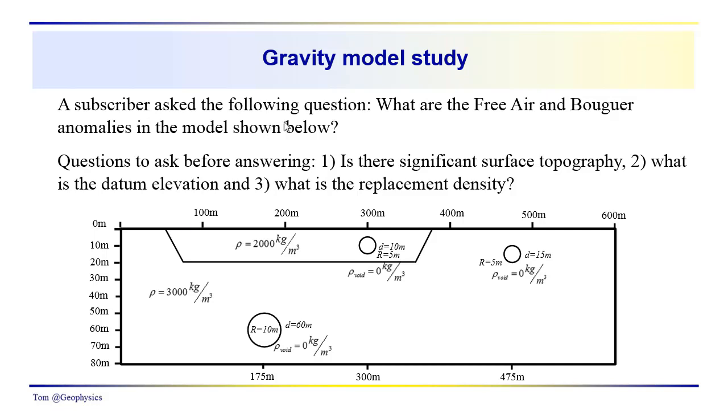The subscriber asked a couple questions about the model shown here. Those questions are: what are the free air and the Bouguer anomalies in the model?